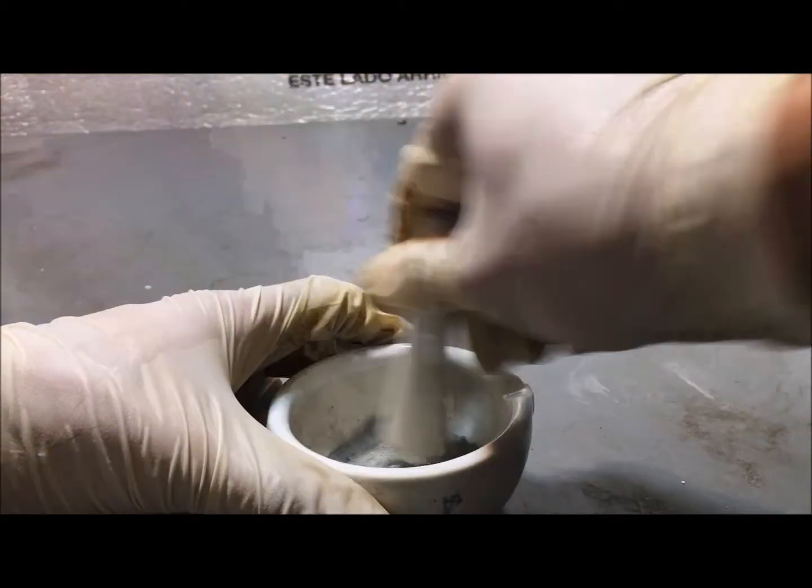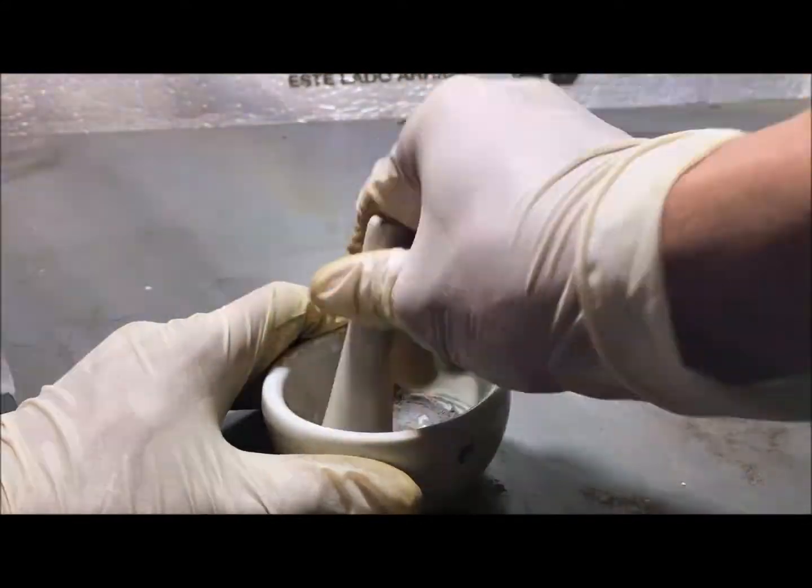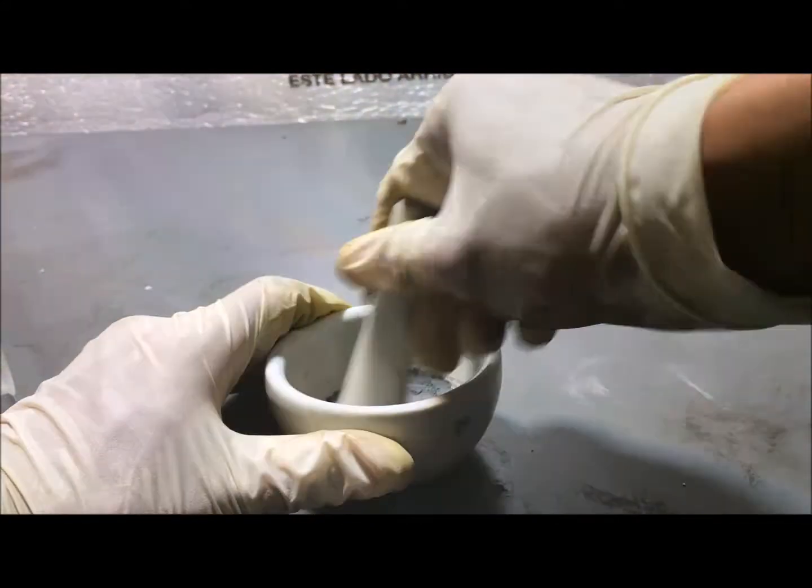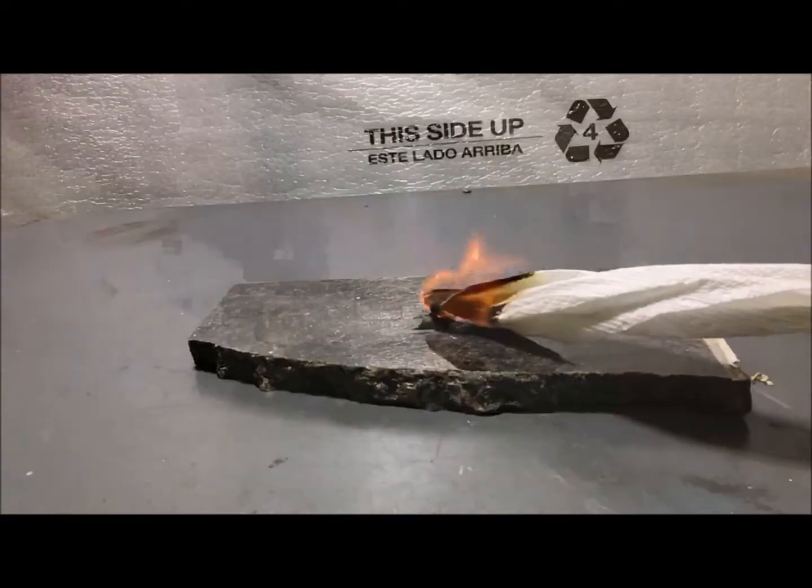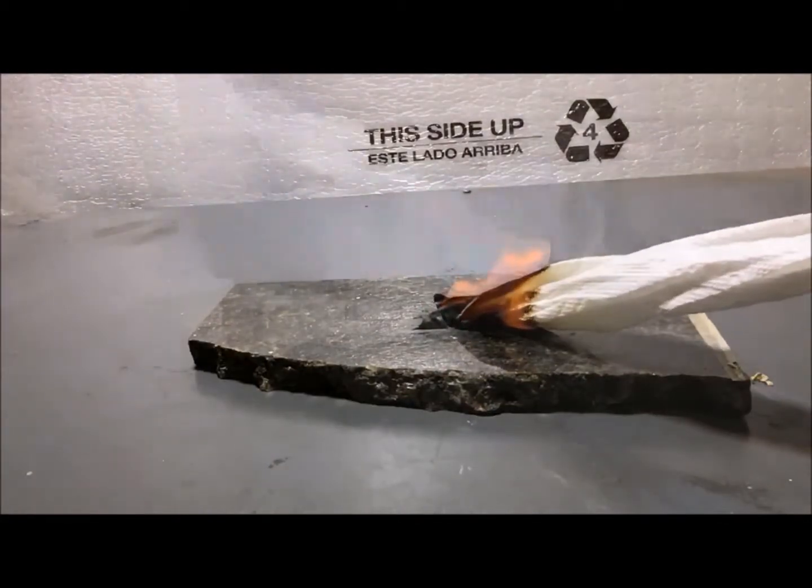To make the zinc sulfide, first we need to mix one gram of zinc metal with half a gram of sulfur. Now we simply light the mixture on fire, in order to bond the sulfur with the zinc metal.